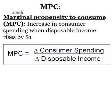The word propensity means likelihood. If somebody has a propensity for violence, they're likely to be violent. So when you see marginal propensity to consume, we're thinking about what is the small likelihood that they're going to spend that money — with that small change, how likely are they to go shopping with it? The MPC equation uses the delta symbol, which means the change in consumer spending over the change in disposable income.